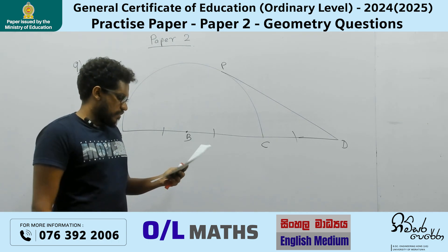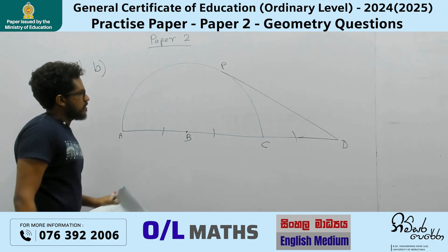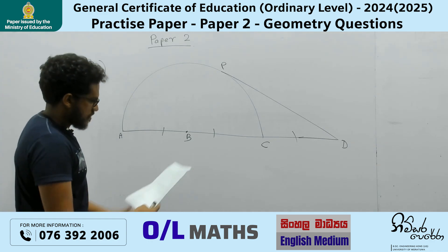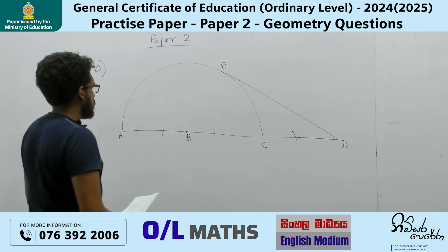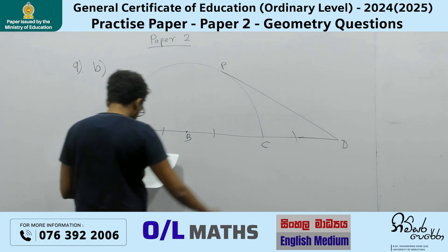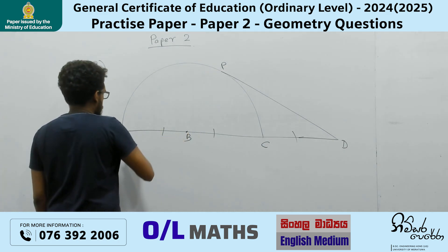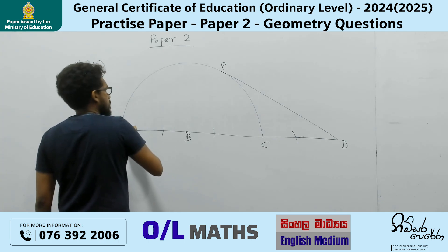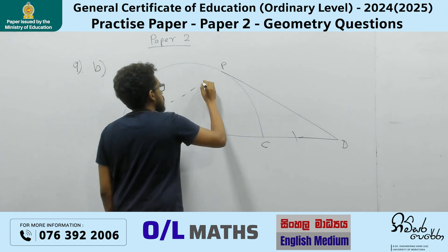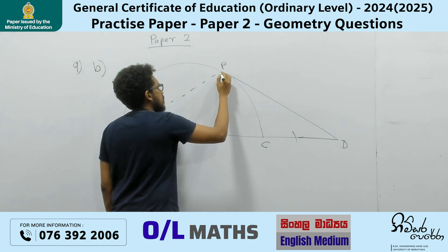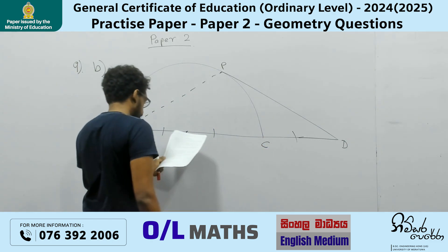Now I'm going to discuss part B of question 9. The diagram shows that angle CAP equals 30 degrees. When the angle is 30 degrees. And they have given that P is a tangent.